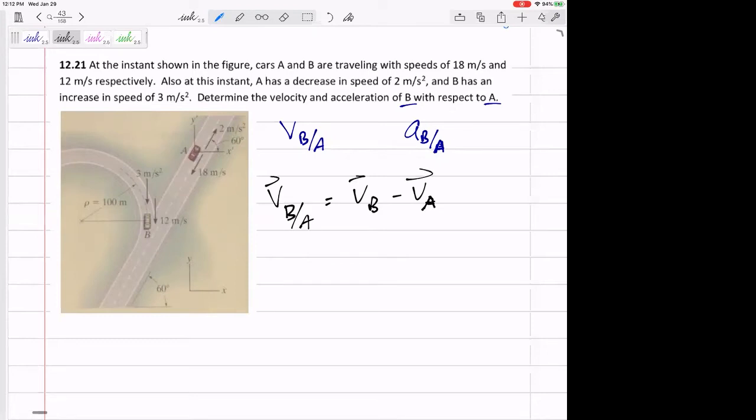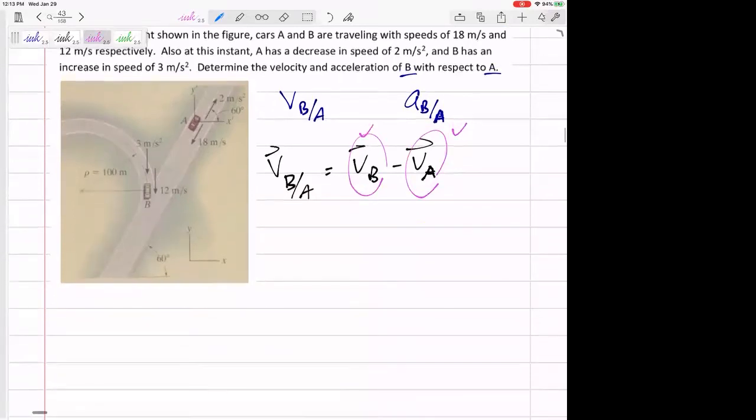All right. So let me plug in what I know. I know B completely. It's drawn on there. It's 12 down. I know VA completely. It's drawn on there. It's 18. And so my two unknowns are just everything on the left inside my equation. I don't know the direction and magnitude of the relative term VB slash A. You can think about those as my two unknowns, or you can think I don't know the I or the J component of VB slash A. But let's just find it.